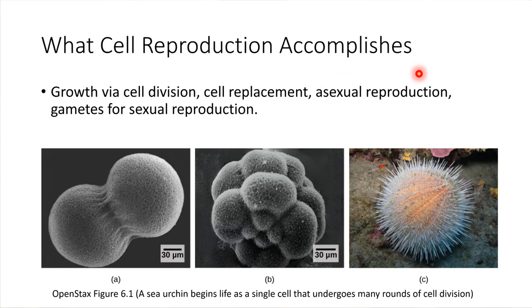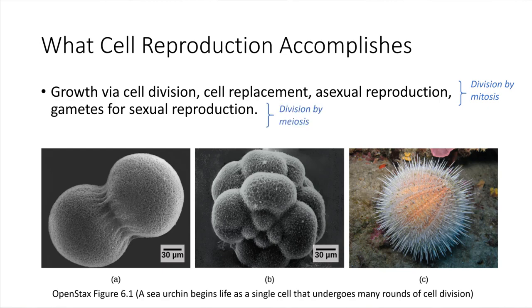Cell division also allows the production of gametes, which is the name for referring to sperm and egg cells — the very special cell types involved in sexual reproduction. There are essentially two different types of cell division, and we'll be learning about both of them. The first three items on the list are accomplished by what we might consider normal cell division, called division by mitosis. The production of eggs and sperm is a different type, called division by meiosis. We're going to learn both of these cell division types in this module.